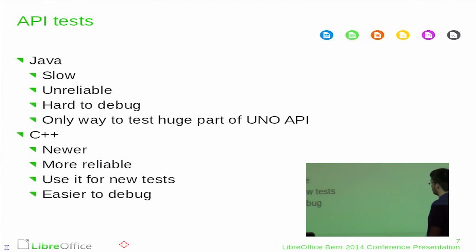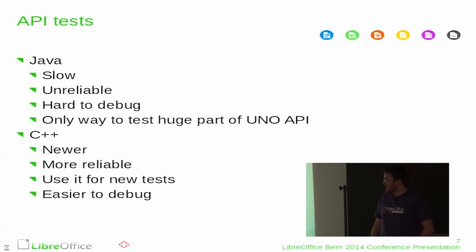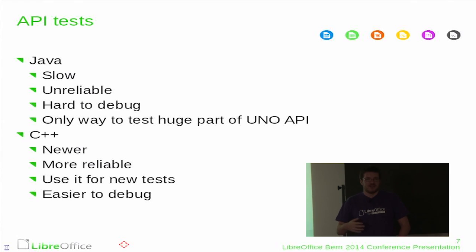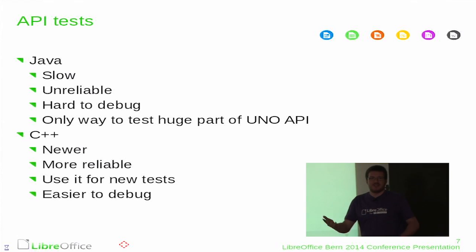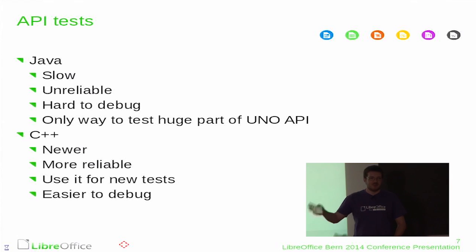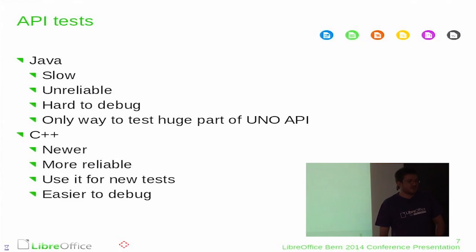We also have API tests — two types. The old Java tests are slow. They run in the subsequent check target and are a bit unreliable. Stefan fixed some parts of them, but they fail from time to time for no apparent reason. They internally use sleeps to get everything right — the assumption is that if you sleep for a second you can call the next thing, but that does not work all the time. They are quite hard to debug, setting breakpoints in Java code and hoping to also hit breakpoints in the C++ code. But it is still the only way to test a huge part of our UNO API, because writing new test code for that would take years.